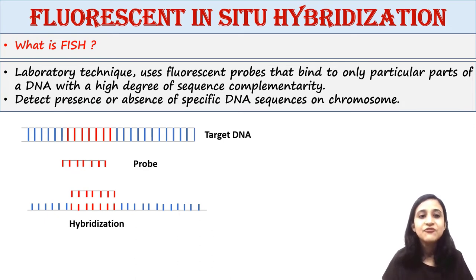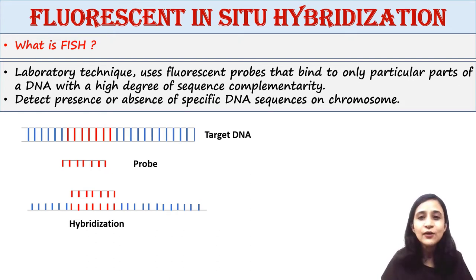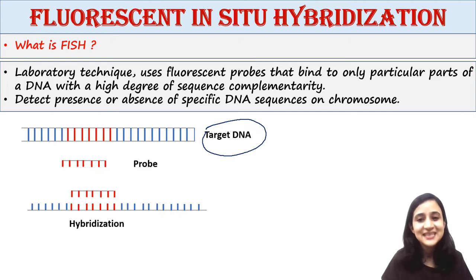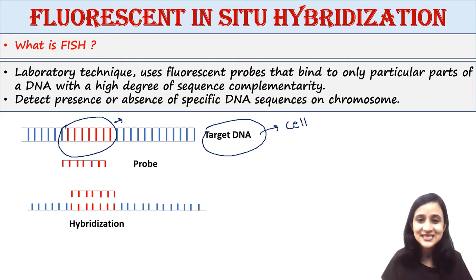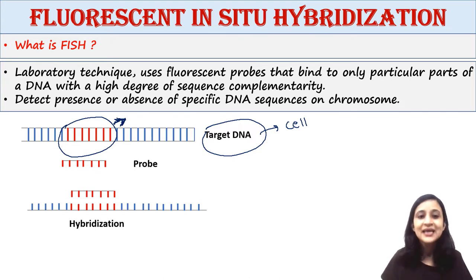So first of all, what is FISH? Basically, FISH is a laboratory technique which uses fluorescent probes that bind to only particular parts of a DNA with a high degree of sequence complementarity. Here we have the target DNA, which is present inside a cell. The red part is the part you are interested in — this sequence is present in this target DNA.